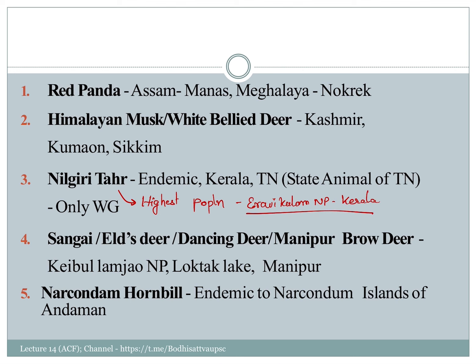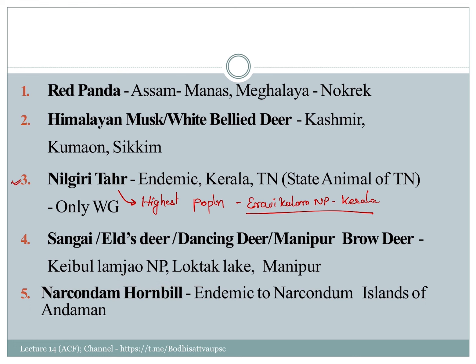Eravikulam National Park in Kerala, Anamalai National Park — these are key areas. The shola forest and shola grassland are associated habitats. The swamp deer or bhasingha is found in national parks. The dancing deer is a brow-antlered deer found on floating phumdis — floating land masses — in Keibul Lamjao National Park, Manipur.